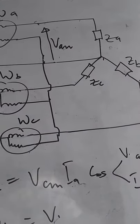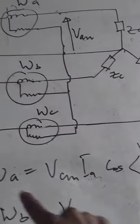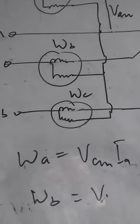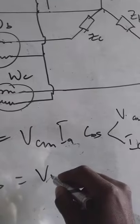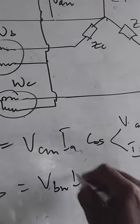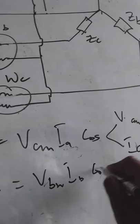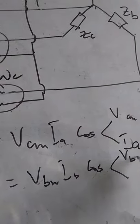The same thing for Wb, which will give you Vbn Ib cos the angle between Vbn and Ib.